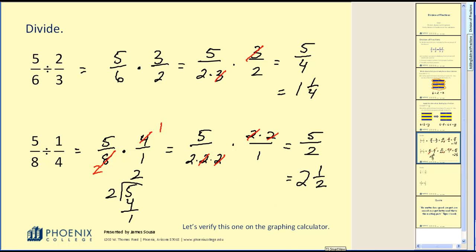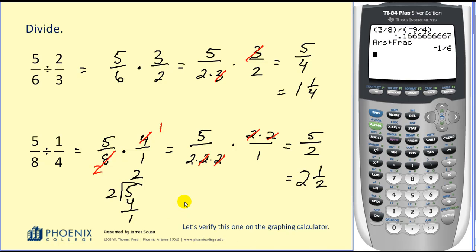I mentioned I would show you on the graphing calculator how to verify these answers. Let's go ahead and verify this problem that we just did. So I'm going to enter in 5/8 in a set of parentheses. Divide that by 1/4. Again, I'm putting the fraction in a set of parentheses. When I hit enter, it will give me the decimal value, but if I wanted to have it in fraction form, there are a couple ways of doing that. If I hit math, enter, enter, that will show me the answer is 5/2.